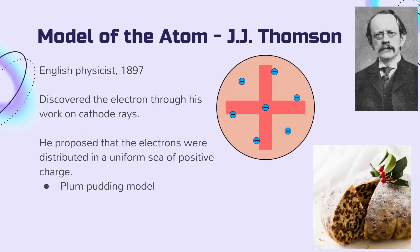It isn't until the end of the 19th century that we really get a view of what's going on inside the atom. In 1897, through his work studying cathode rays, English physicist J.J. Thomson discovered the electron. He proposed that, in order for atoms to remain neutral, the electrons must be distributed in a uniform sea of positive charge. This was referred to as the Plum-Pudding model.